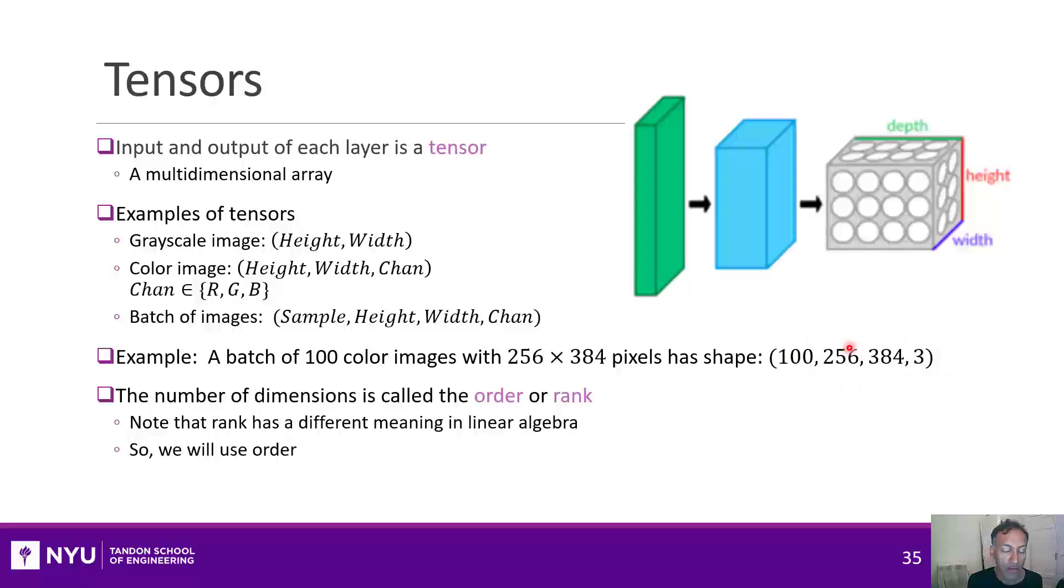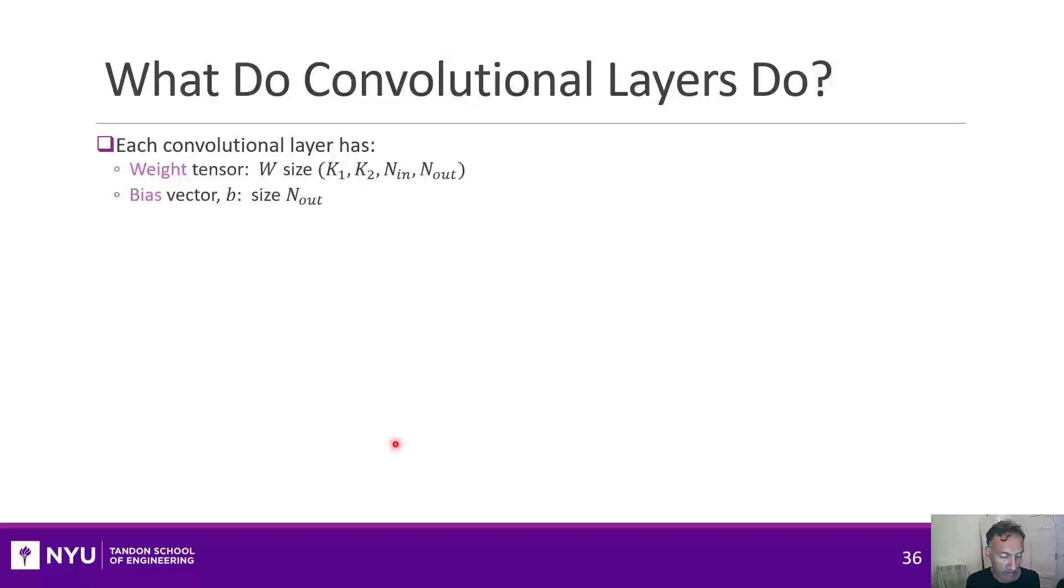Now, you will also hear the term calling this a fourth-order tensor, or even a rank four tensor. Of course, rank means something different in linear algebra. So we're going to either use dimension or order here to be clear. All right, let's go back to that AlexNet. I said that there are, first, a set of convolutional layers.